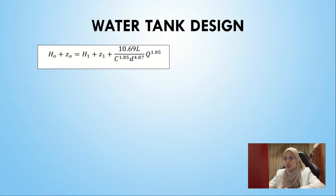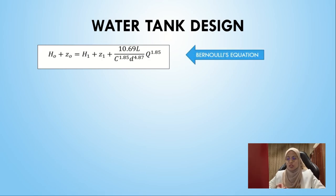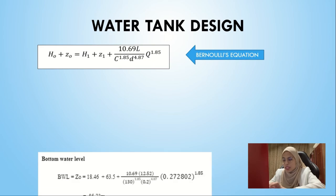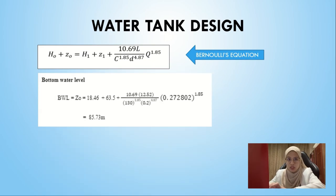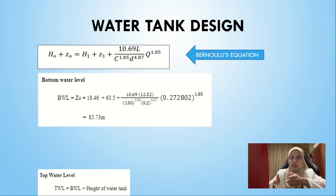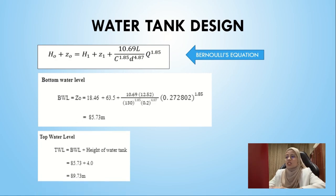We proceed to the water tank design using Bernoulli's equation to calculate the bottom water level. Data is obtained from previous calculations and ePanet. We get 85.73 meters for the bottom water level, measured from the elevation. The top water level is calculated by adding the bottom water level to the proposed tank height of 4 meters, giving a top water level of 89.73 meters.